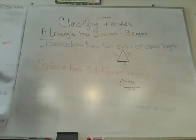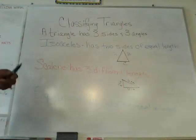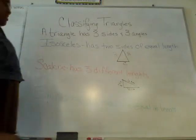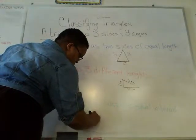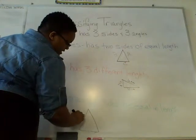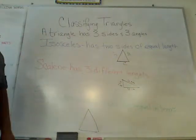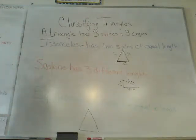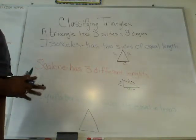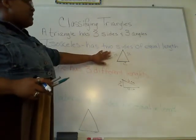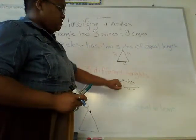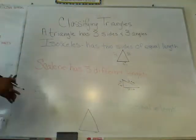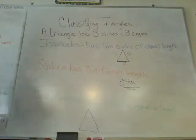And then we have the equilateral triangle — all sides are equal in length. So to recap: isosceles has two sides equal in length; scalene has three different lengths; and equilateral has all sides equal in length.